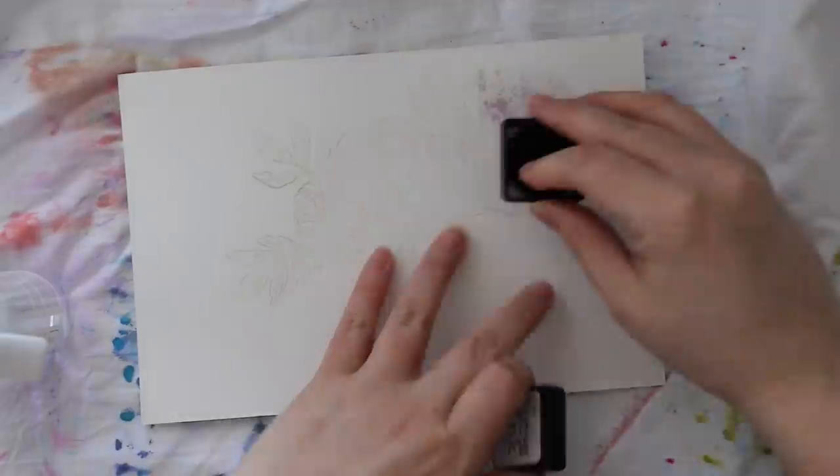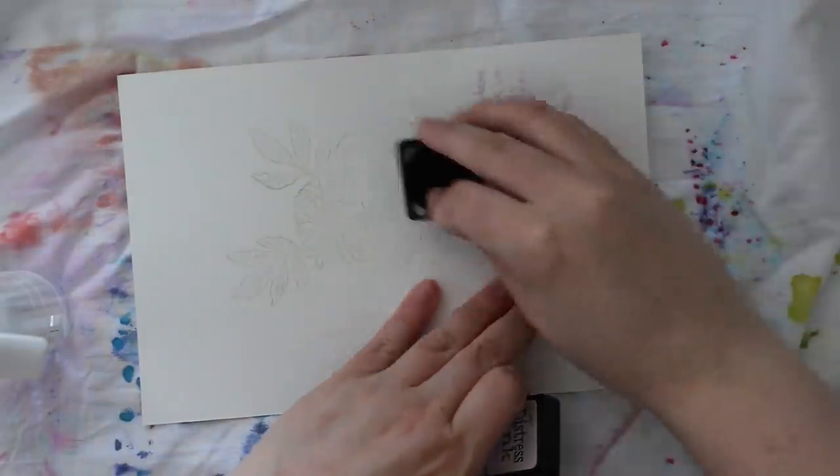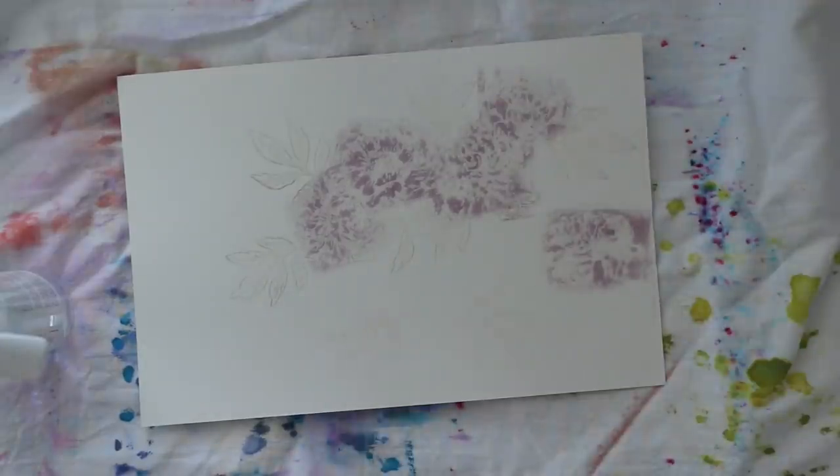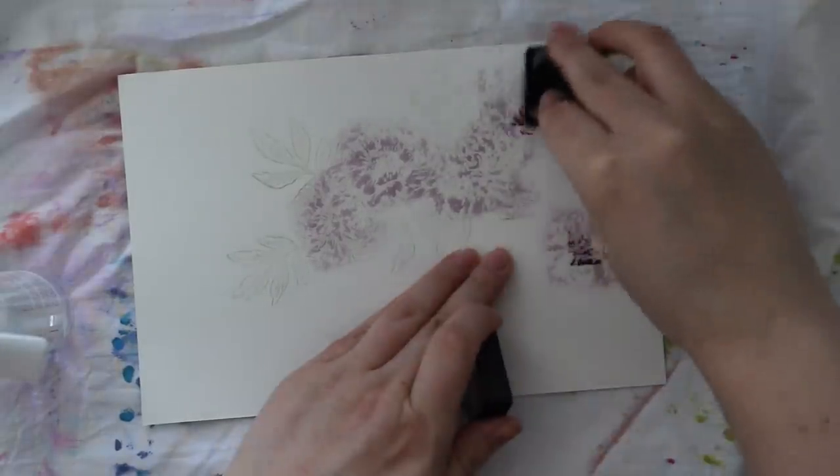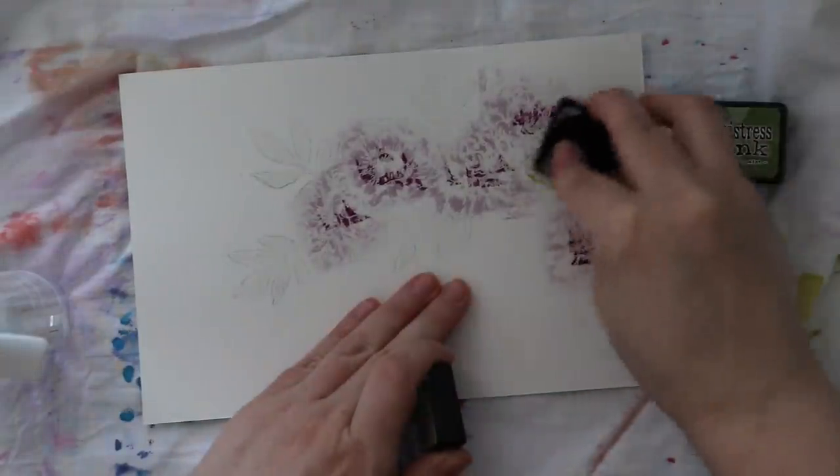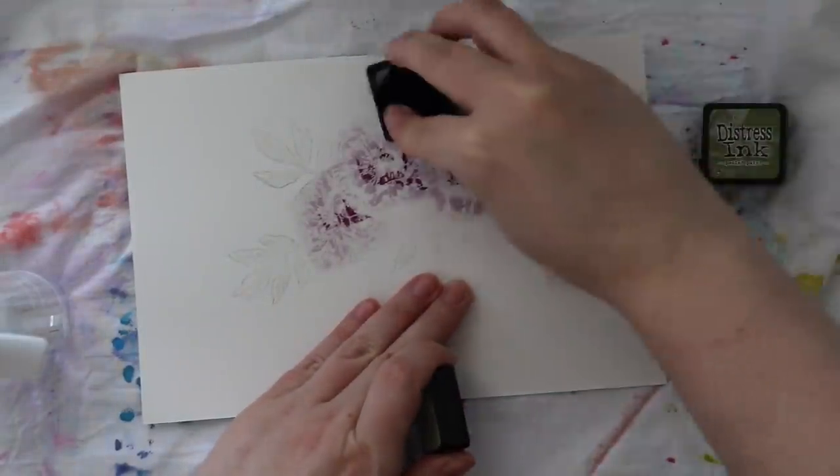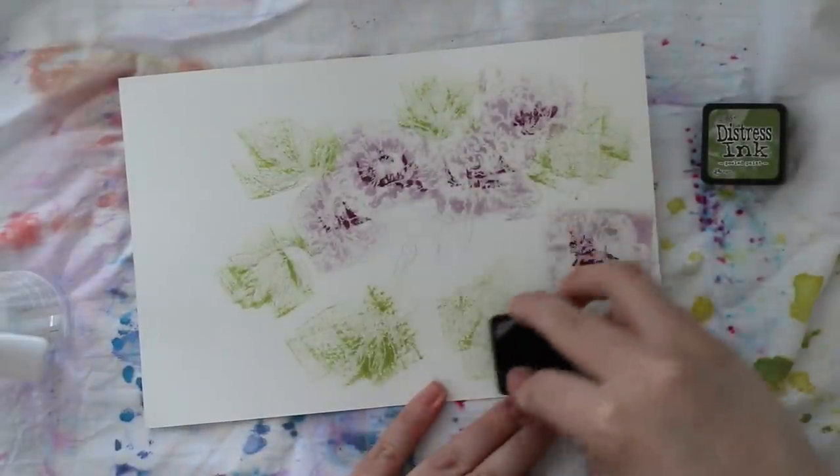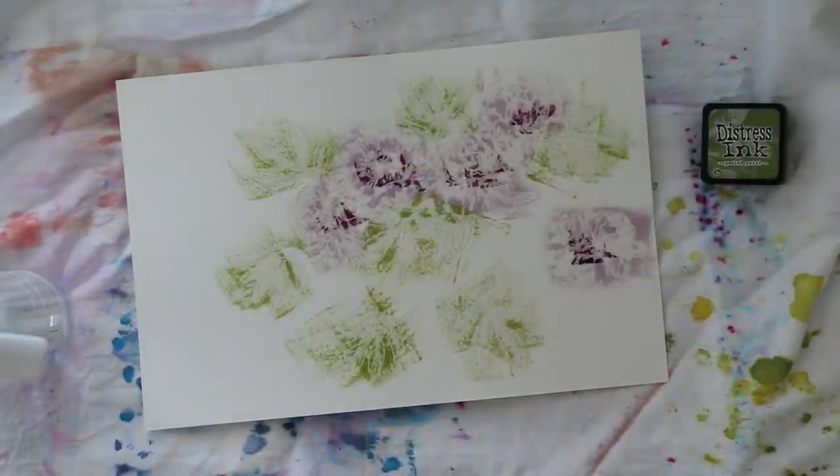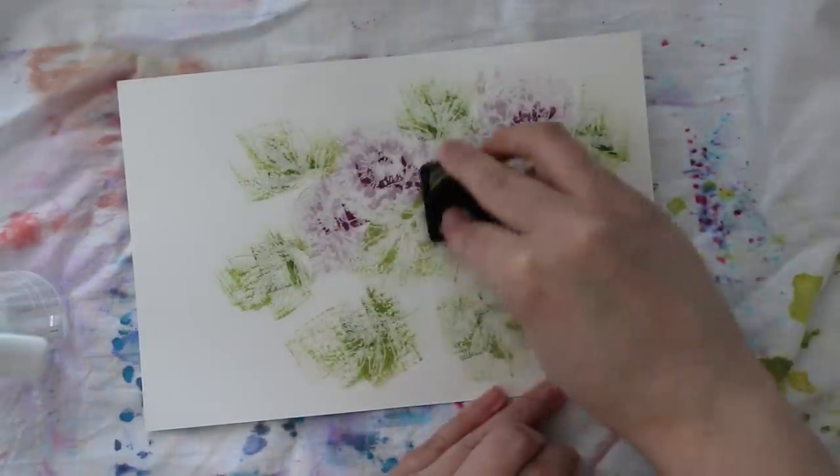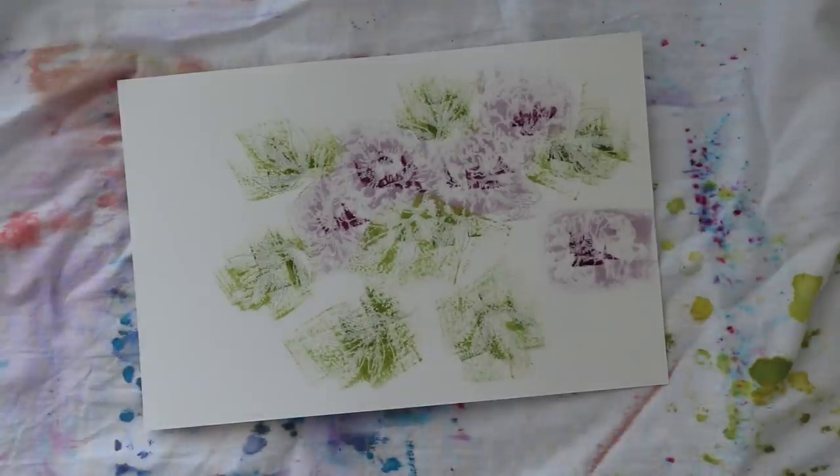I'm taking my distress ink mini cubes and literally applying the color directly to these images. The color challenge this week is kind of a mauve purple, green, and cream. I'm using two shades of each: milled lavender and seedless preserves for the flowers, and shabby shutters and peeled paint for the leaves.